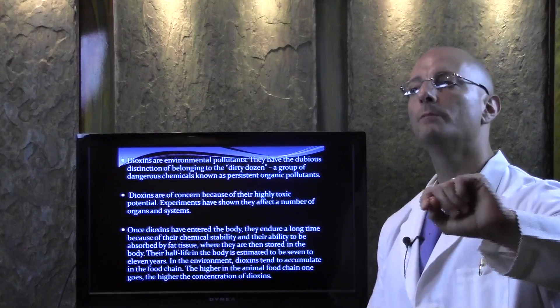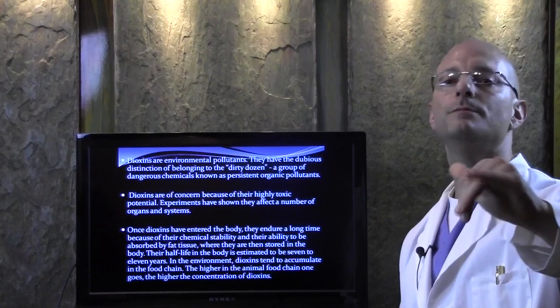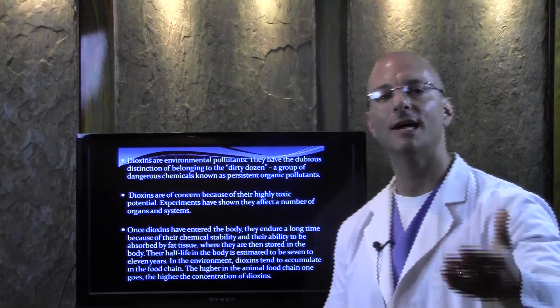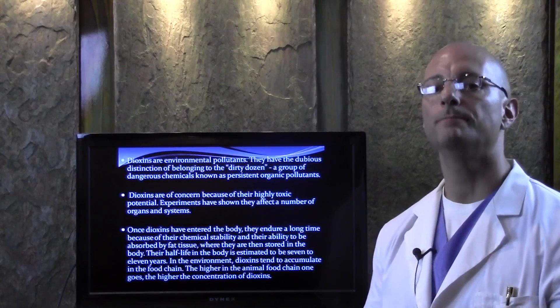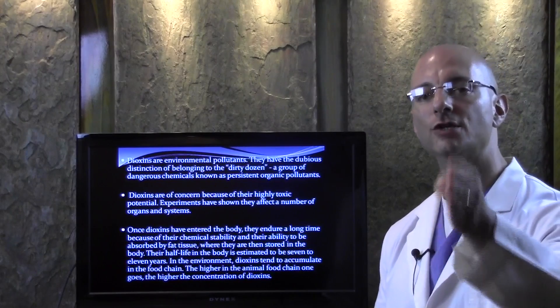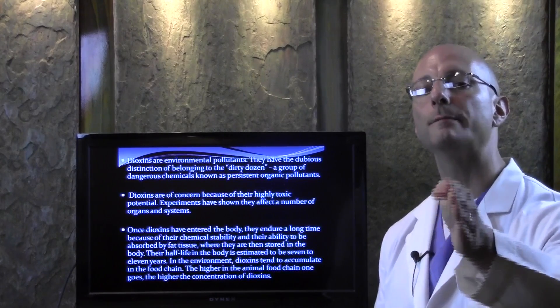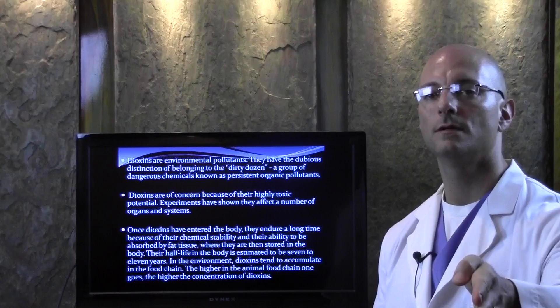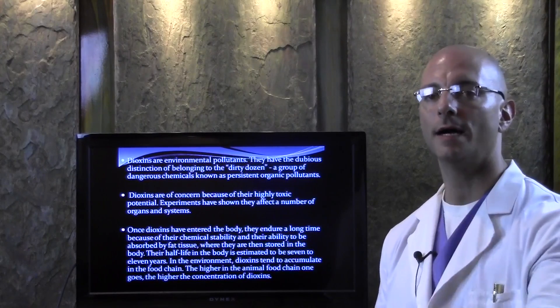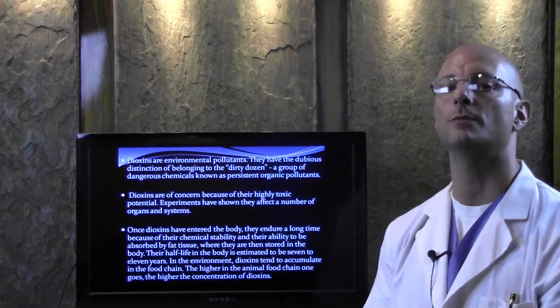That means one bit of ribs or one bit of meat or fish that has this dioxin exposure in it will stay in your fatty tissue for 7 to 11 years causing immune problems, toxic effects in your body. You don't even have to eat the food again and it can still be in your body.